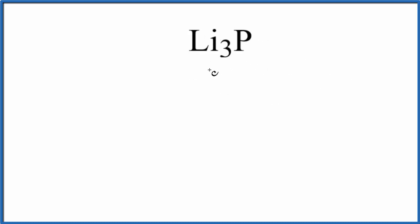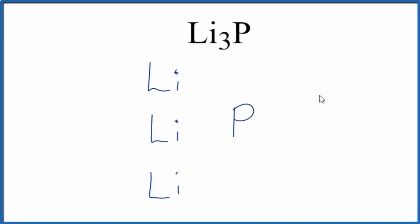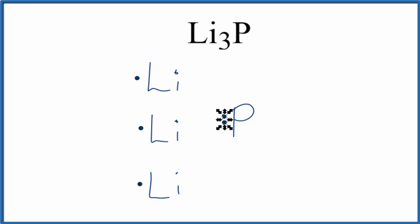Let's start by drawing three lithium atoms, then we'll put our phosphorus atom right over here. On the periodic table, lithium is in group one, so it'll have one valence electron — each lithium has one valence electron. Phosphorus is in group 15, sometimes called 5A, so it'll have five valence electrons. Our metal is going to transfer its valence electron to the phosphorus.